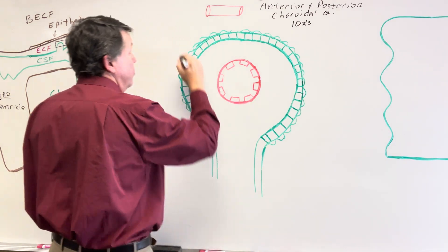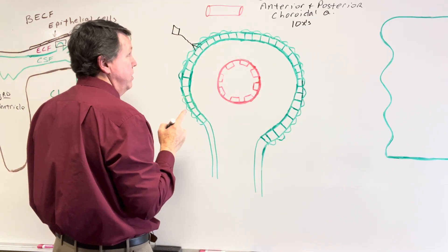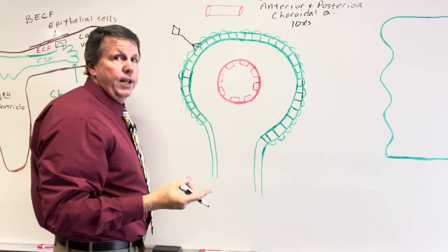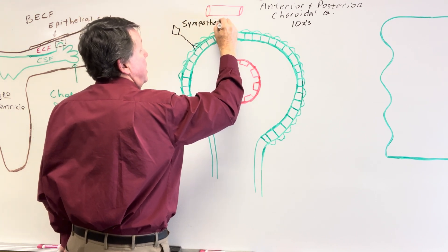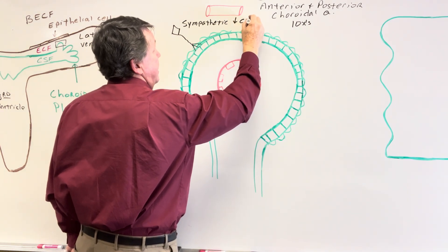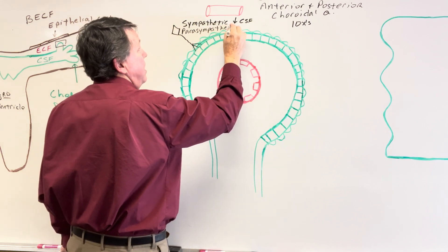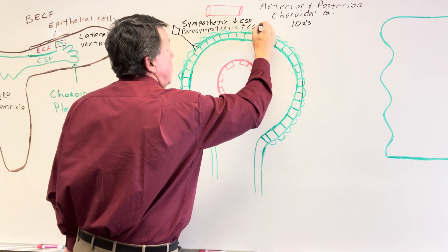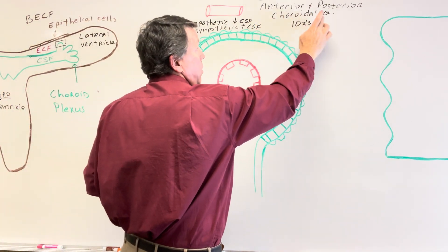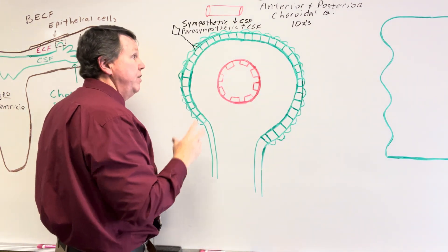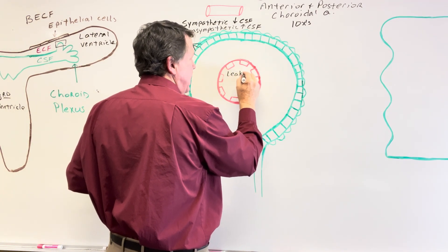This is also going to be innervated by nerves. A nerve comes down to the choroid plexus. The sympathetic portion is going to cause a decrease in CSF, and the parasympathetic is going to cause an increase in CSF. Right in the middle we're going to have a capillary — the anterior and posterior choroidal arteries feed into this capillary. These capillaries are outside the blood-brain barrier and they're going to be leaky capillaries.